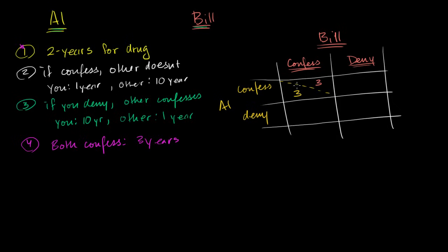If Al confesses and Bill denies, then we are in scenario two from Al's point of view. Al's only going to get one year. But Bill is going to get 10 years.